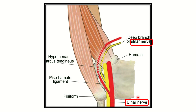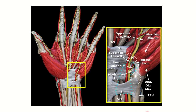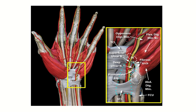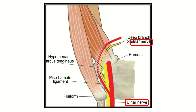So the ulnar artery lies on the radial side — the outer or lateral part — compared to the ulnar nerve. Looking at another picture in the same position, we can confirm our final answer: it lies on the radial side. The ulnar artery lies on the radial side compared to the ulnar nerve, or we can say the ulnar artery is protected from the inner side by the ulnar nerve.